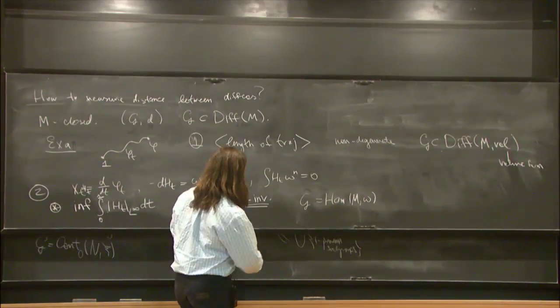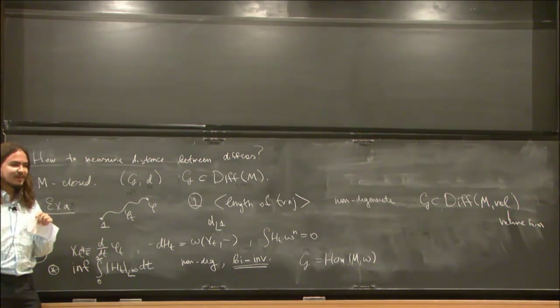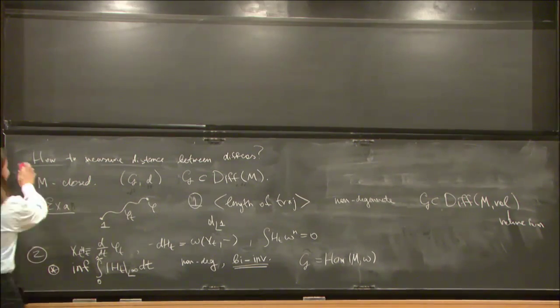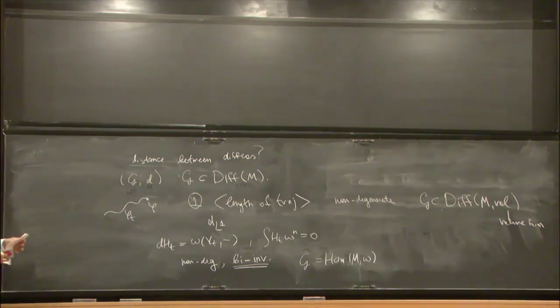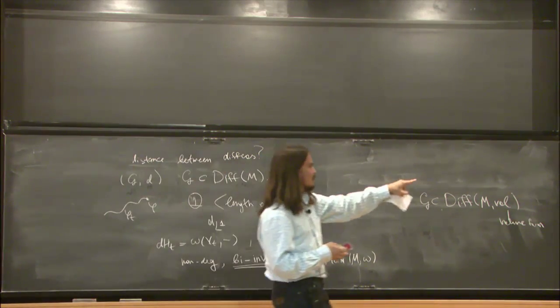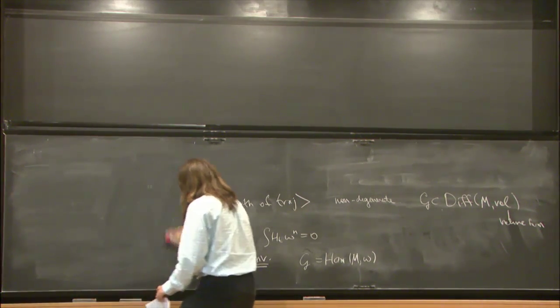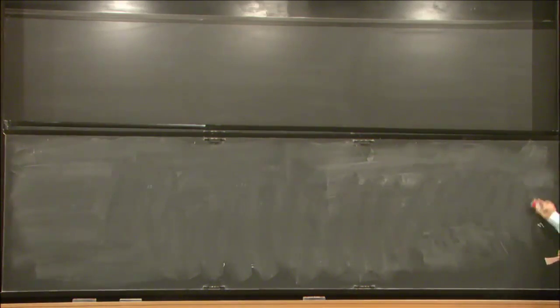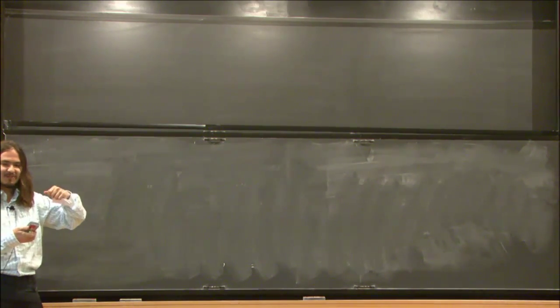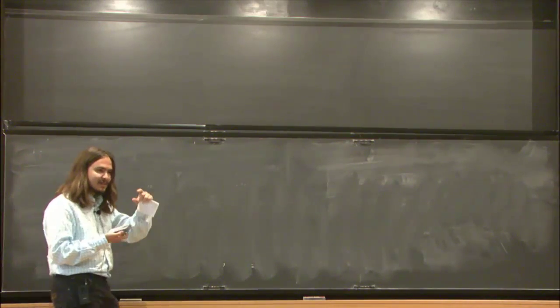Let me say something about contact diffeomorphism groups. In the contact case, it is very curious that if one has a bi-invariant metric, then it cannot be fine. This means that zero cannot be an accumulation point of values. So if a diffeomorphism is not trivial, then the metric is at least some constant, which is fixed.